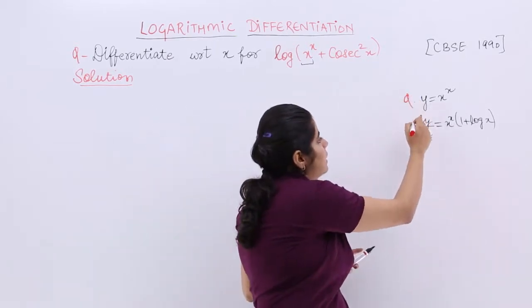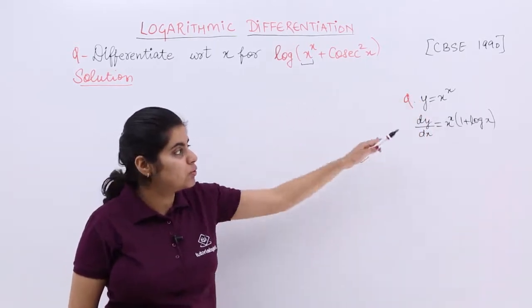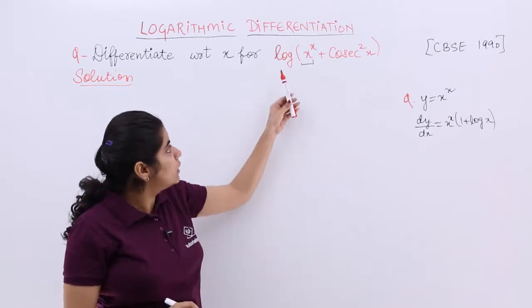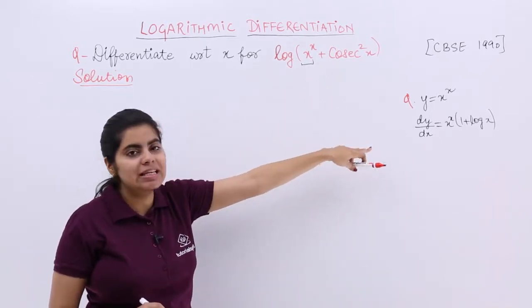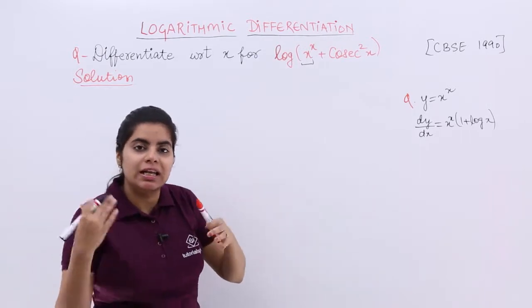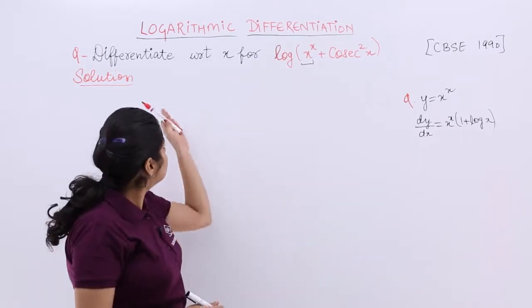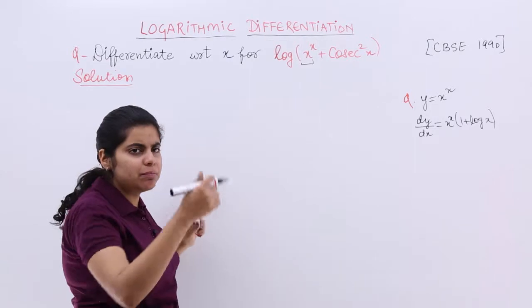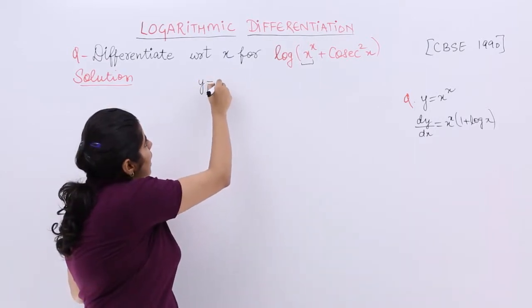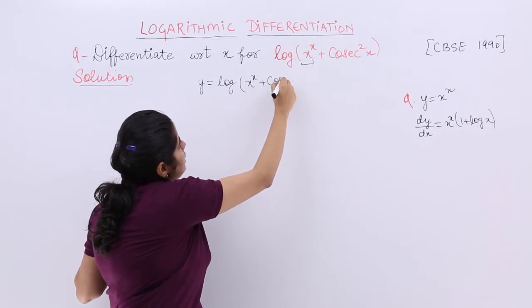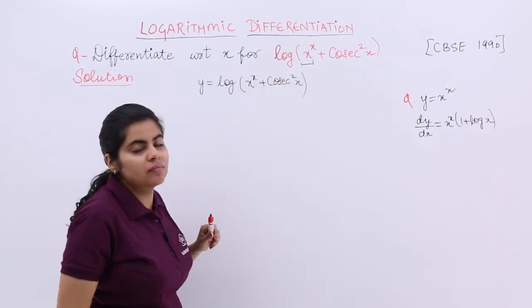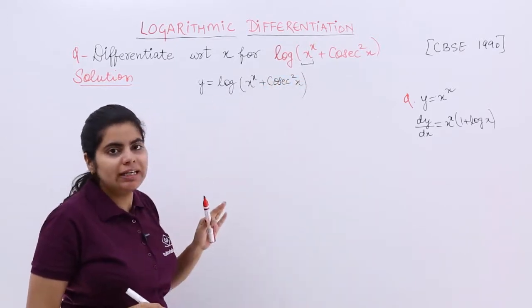So the question was this, and you know that log(x^x + something) is given. Dealing with x^x is not difficult for us. Now what to do? Let's see. The heading is written as solution. Let me substitute this question as y = log(x^x + cosec²x). Now you have to differentiate directly.